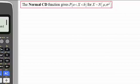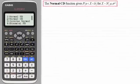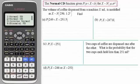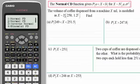Now, in order to demonstrate how this function works in various examples, I've developed this particular question here where we have the volume of coffee dispensed from a machine X mL, and it's modeled as a normal distribution with a mean of 250 and a variance of 1.2², or 1.44, but I prefer to just write it as the standard deviation 1.2 all squared.